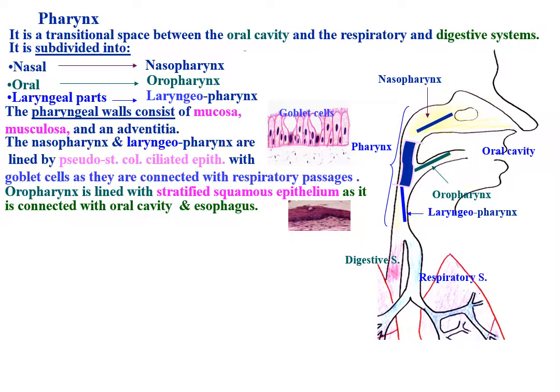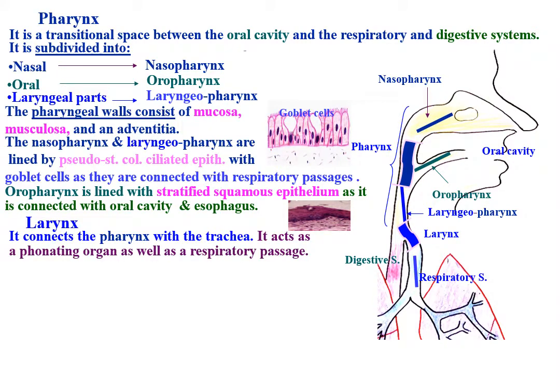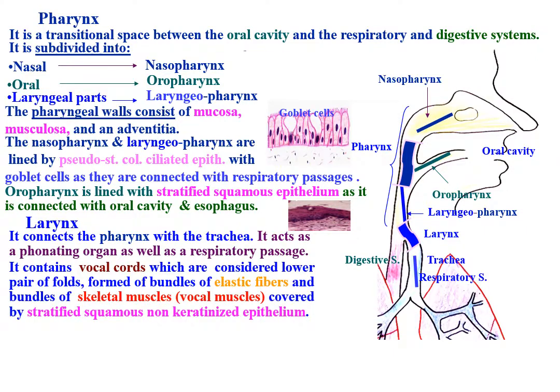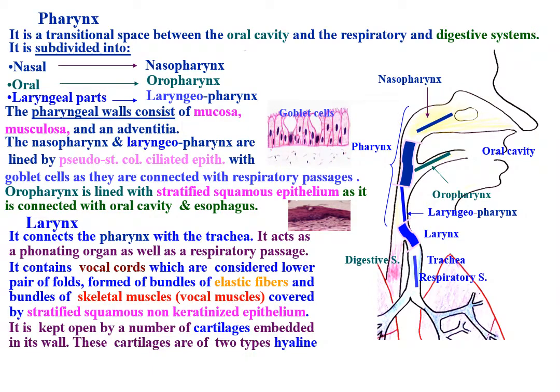The larynx connects the pharynx with the trachea. It acts as a phonating organ as well as a respiratory passage. It contains the vocal cords, which are considered the lower pair of folds, formed of bundles of elastic fibers and bundles of skeletal muscles (vocal muscles), covered by stratified squamous non-keratinized epithelium. The larynx is kept open by a number of cartilages embedded in its wall.